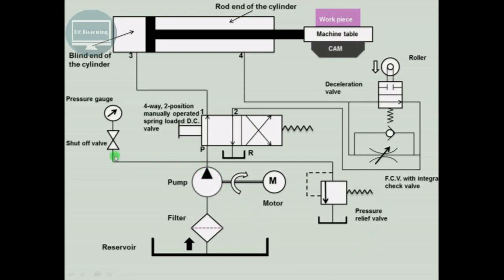There is also a shut-off valve connected to the pressure gauge, which indicates the circuit pressure. If the pressure exceeds the design pressure, some of the fluid will go to the relief valve, flow to the reservoir, and the system pressure is restored back to the original value.